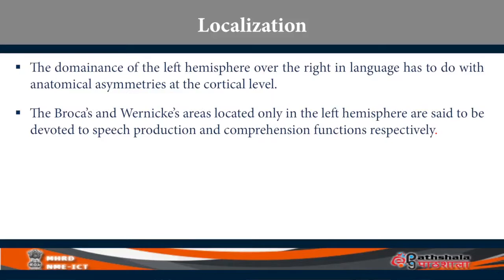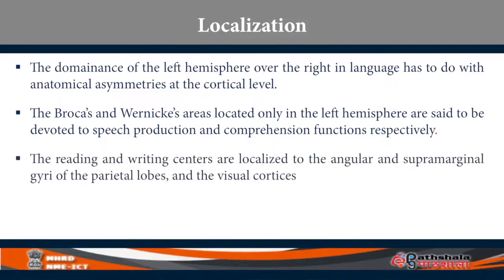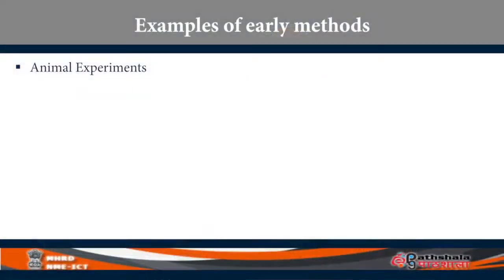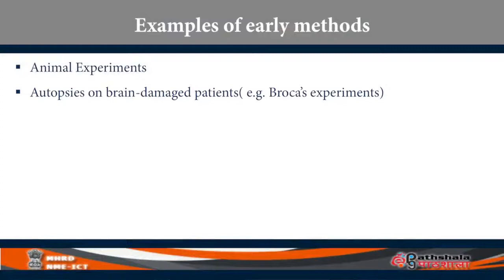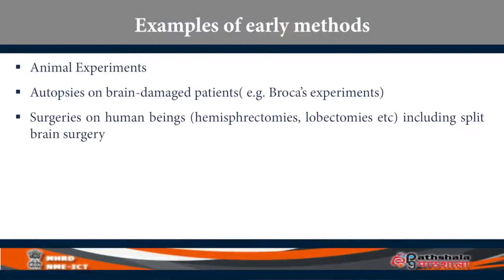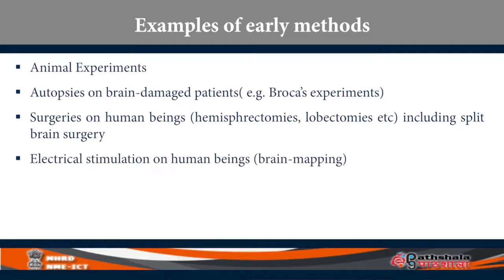The reading centers are supposedly in the angular gyrus and the supramarginal gyri in the parietal lobe, and of course the visual cortices in both hemispheres. So specific functions being localized to specific areas is localization. In this lecture I will be talking about some of the early methods: ablation experiments on animals, autopsies on brain-damaged patients, surgeries on human beings such as removing a lobe or an entire hemisphere or splitting the two hemispheres, electrical stimulation, and finally a behavioral test called dichotic listening.